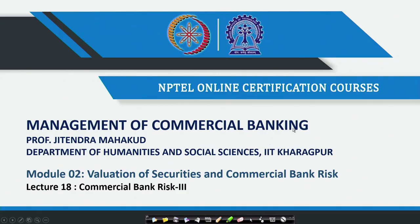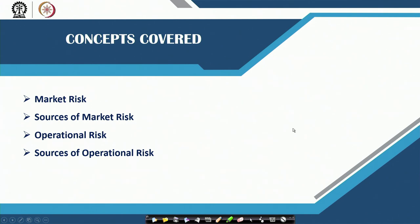In the previous session we discussed about credit risk — what it is and the different sources of credit risk. As per the Basel norms, banks are also exposed to different other types of risk like market risk, operational risk, liquidity risk, etc. In today's session we will be covering two different types of risk: market risk and operational risk.